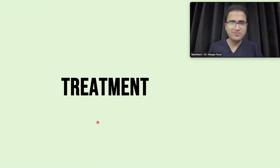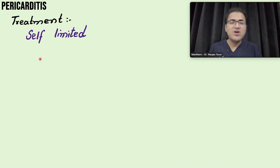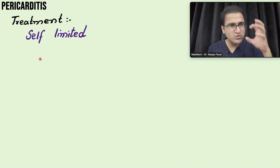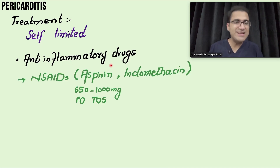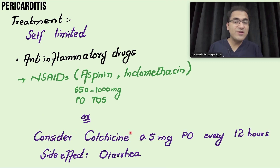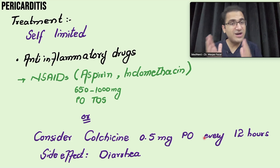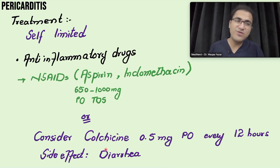In Stage 4, all ECG changes normalize as inflammation resolves. For treatment of acute pericarditis — which is a self-limiting condition — anti-inflammatory drugs are given for pain and inflammation. Aspirin 650–1000 mg orally three times daily is used. Colchicine can be given in combination with NSAIDs or alone — particularly in CKD patients where NSAIDs cannot be used. Colchicine is dosed at 0.5 mg orally twice daily. An important side effect of colchicine is diarrhea.